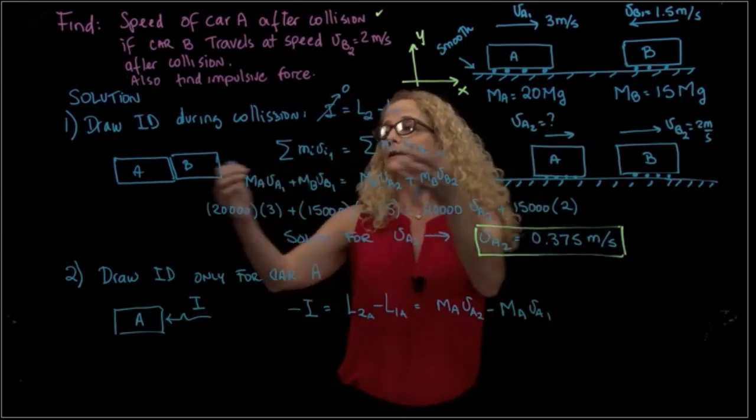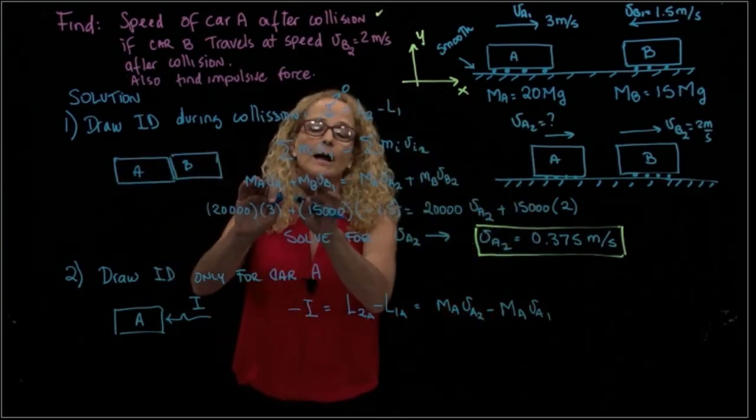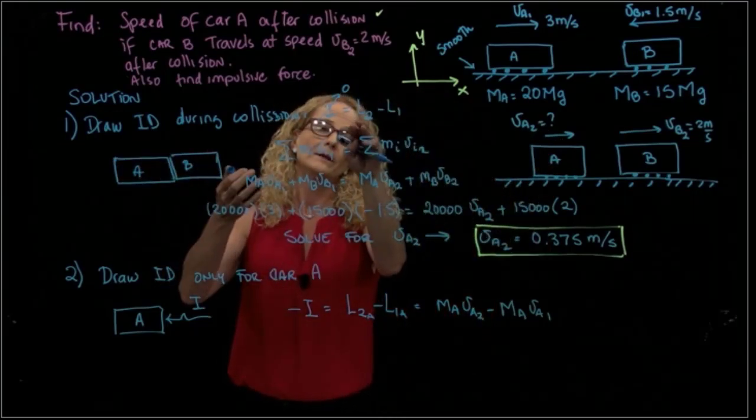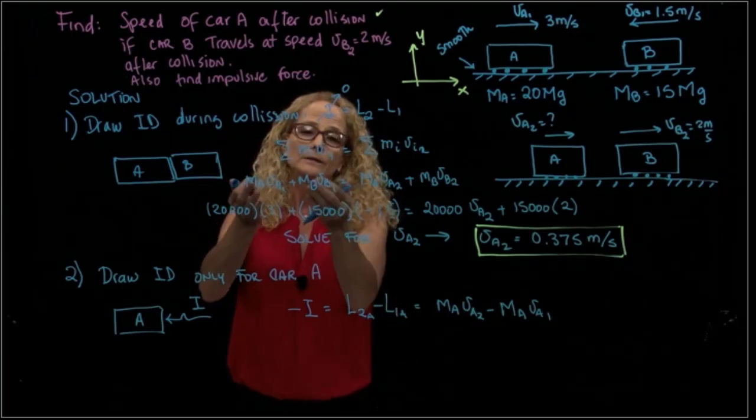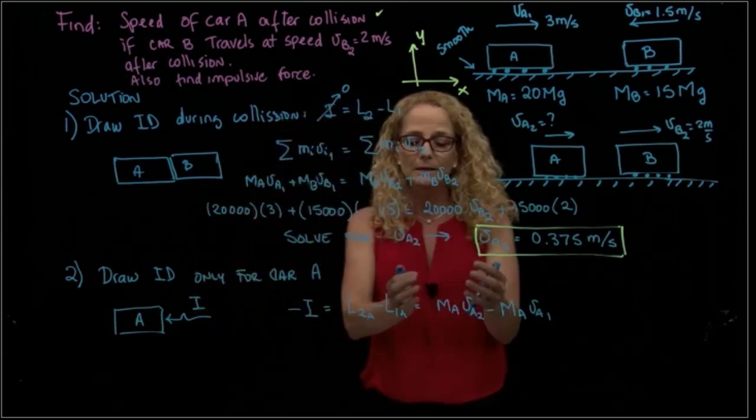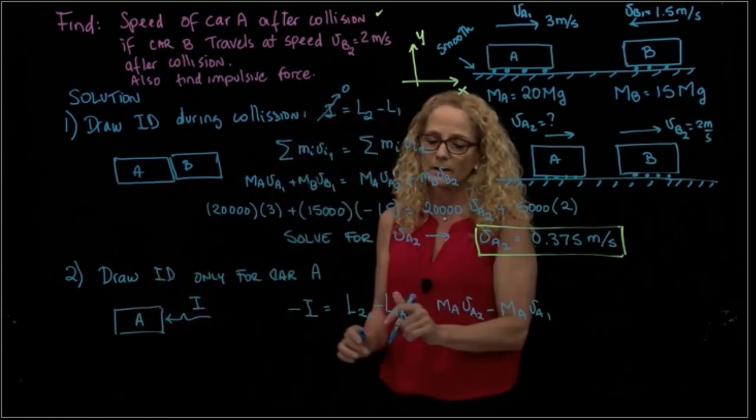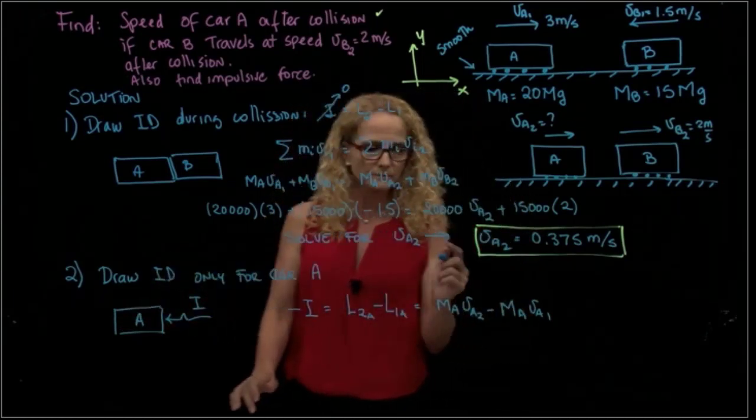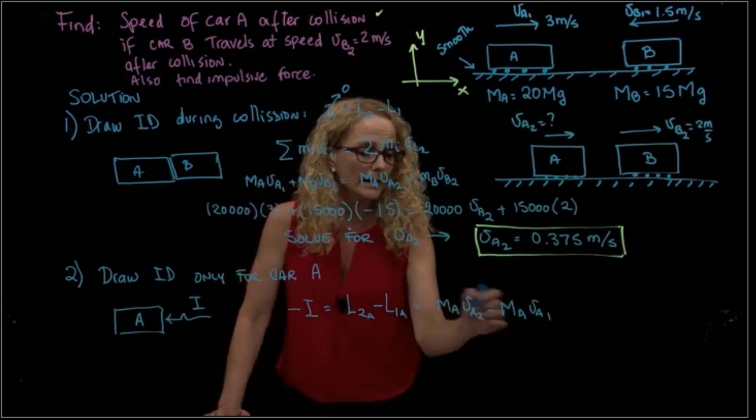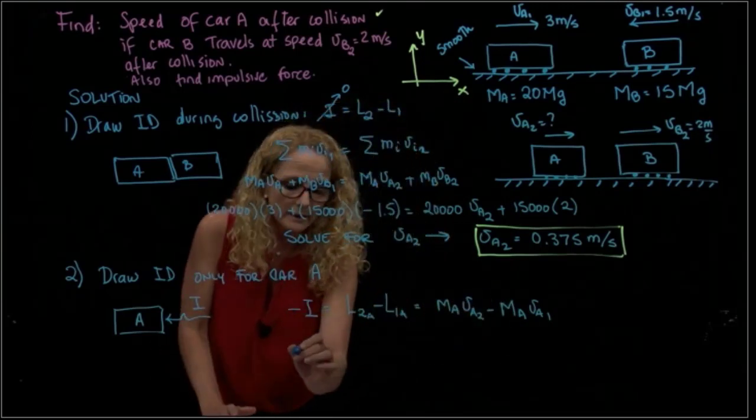In the first case, I had the two cars together, so my linear momentum was the addition of both masses. Here the linear momentum only considers one mass, because that's what I drew. So here I have everything but the impulse. This equals mass A